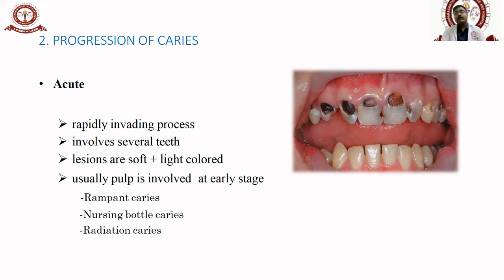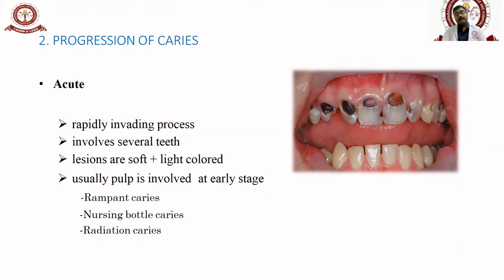Radiation caries is a type of caries occurring in patients undergoing cancer treatment. Patients with head and neck cancers receive radiation therapy, which leads to very low saliva production, making them highly susceptible to caries. Nursing bottle caries — also called early childhood caries — occurs in infants who are given feeding bottles for prolonged periods, such as 10 to 15 hours, leading to this type of caries and associated bacterial damage.